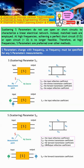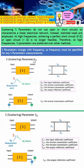Next is S12. The source is at port 2 and the measurement is at port 1, meaning the signal travels in reverse. Therefore, S12 is known as the reverse transmission coefficient.